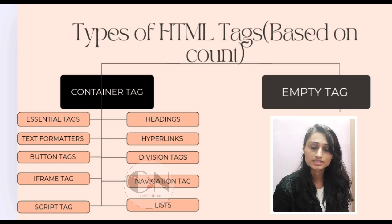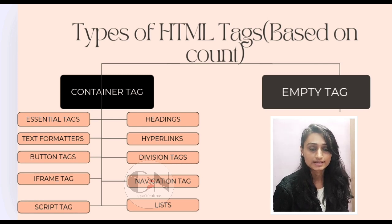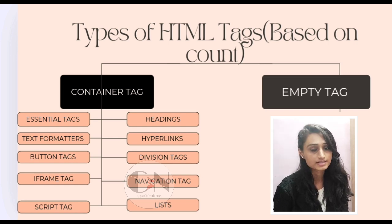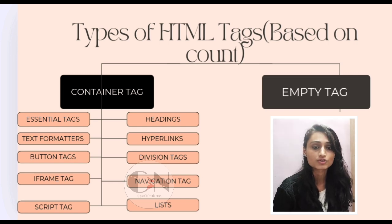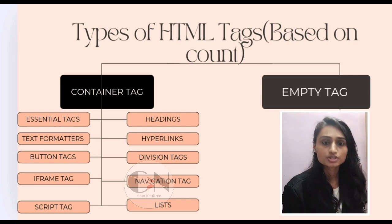The syntax of a container tag starts with the opening tag: a left angle bracket, the tag name, then a right angle bracket, followed by the content, and then the closing tag: a left angle bracket, a backslash, the tag name, and a right angle bracket. This is the syntax of a container tag.